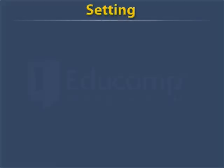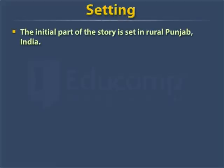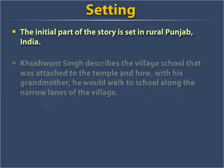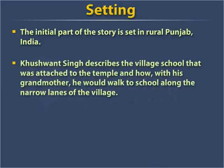Setting. The initial part of the story is set in rural Punjab, India. Khushwant Singh describes the village school that was attached to the temple and how, with his grandmother, he would walk to school along the narrow lanes of the village.